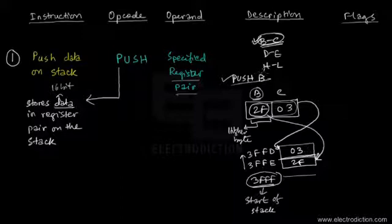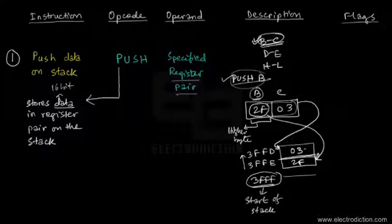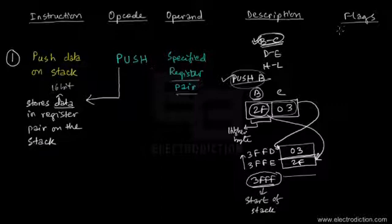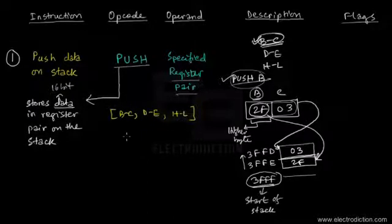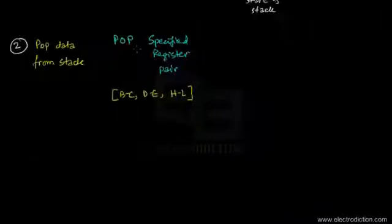Using this instruction once, the data bytes in a register pair store themselves this way. This instruction is limited to register pairs, so always keep in mind that the operands for the PUSH instruction will always be register pairs.